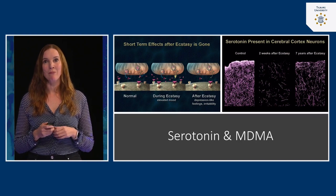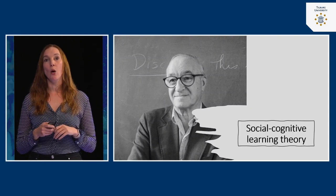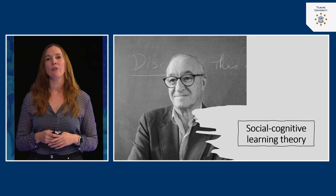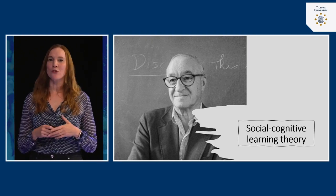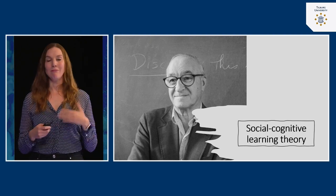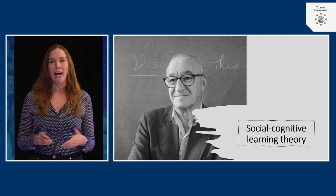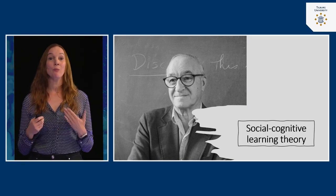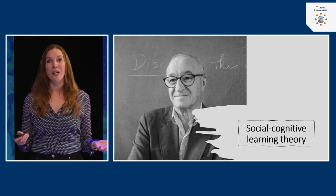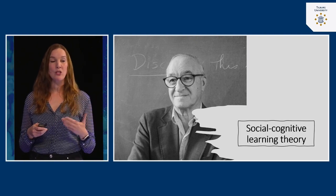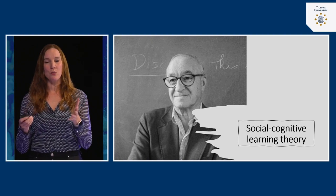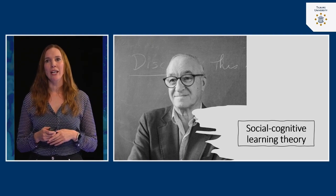Moving on to the third explanation for aggression — social learning theory. We learn by imitating others, especially our caregivers and parents. If parents show aggressive behavior, children are very likely to copy it. Especially if parents model when to show aggression — for example, when frustrated or when driving a car or when provoked — children learn this aggressive response from a very young age.